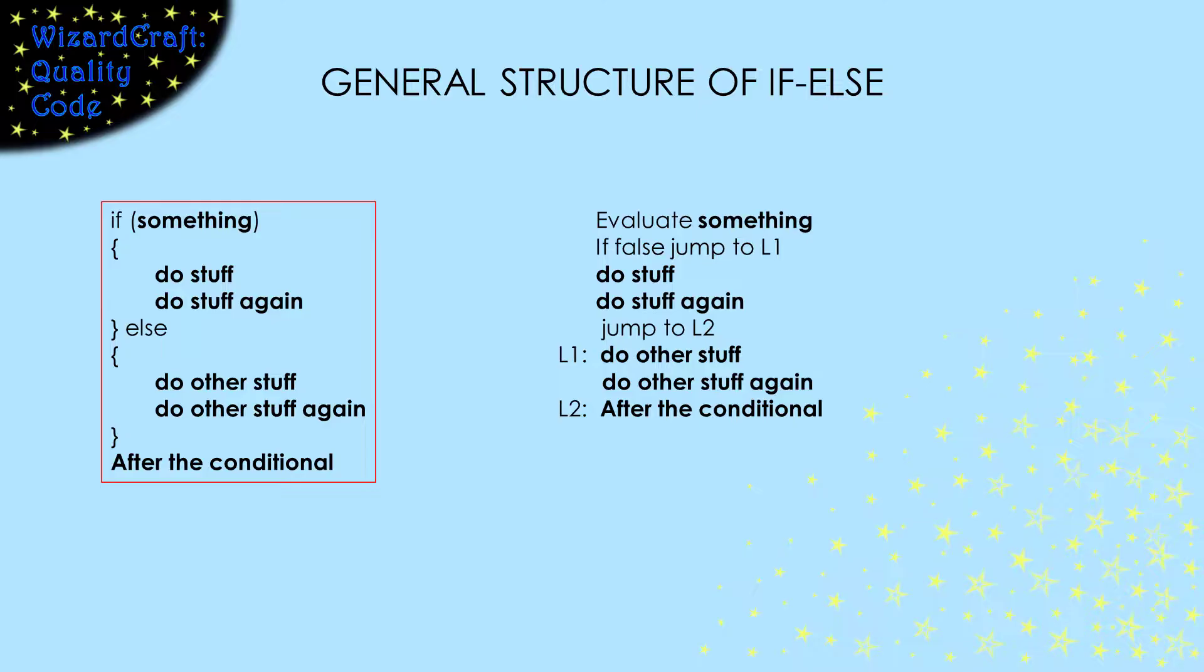So, if we know that one of these actions, either the then block or the else block, happens more often than the other, we should structure our code to put the more common action in the then block because that will make the pipeline get flushed less often.